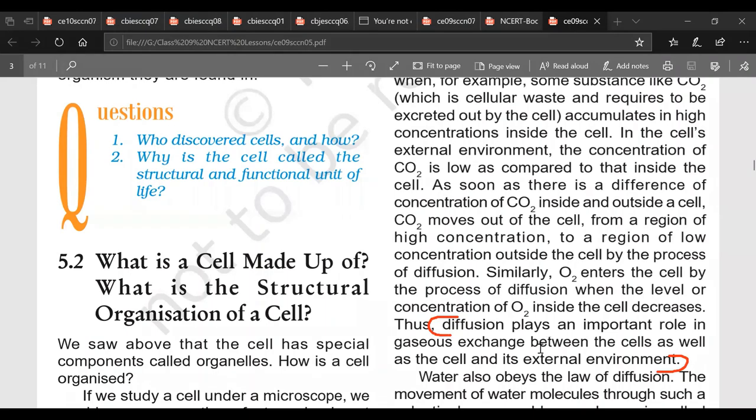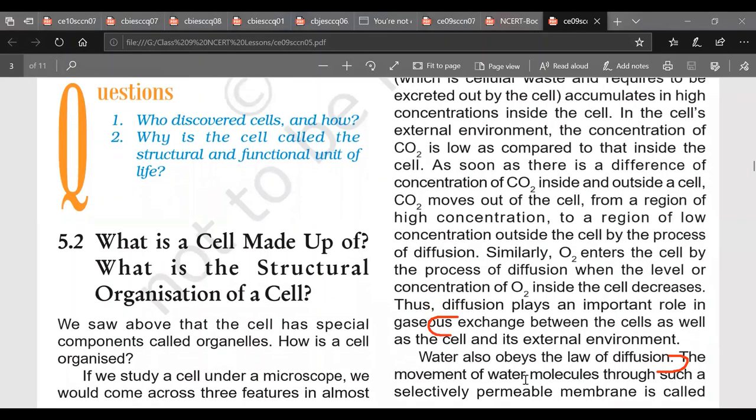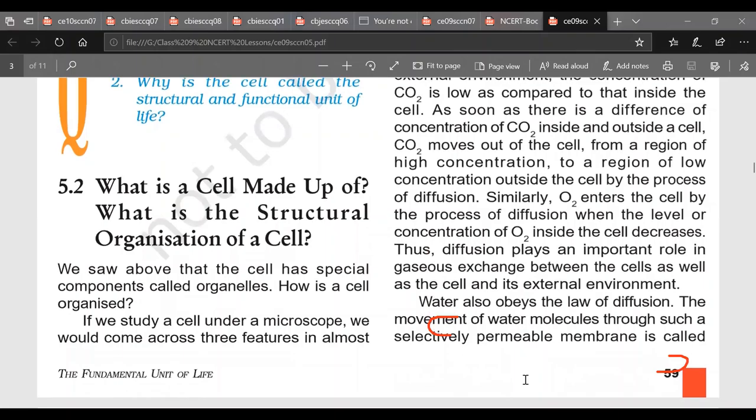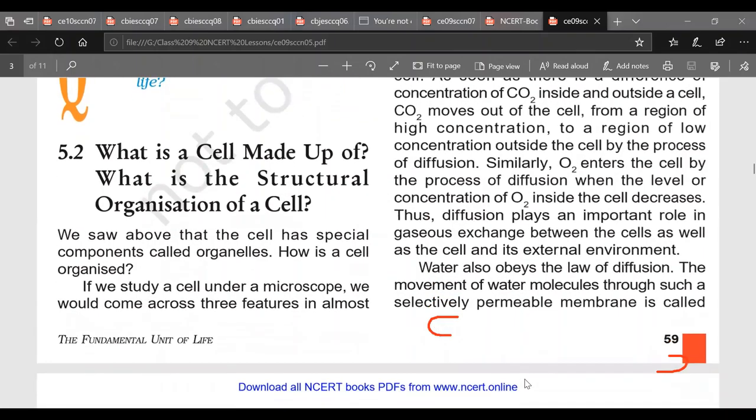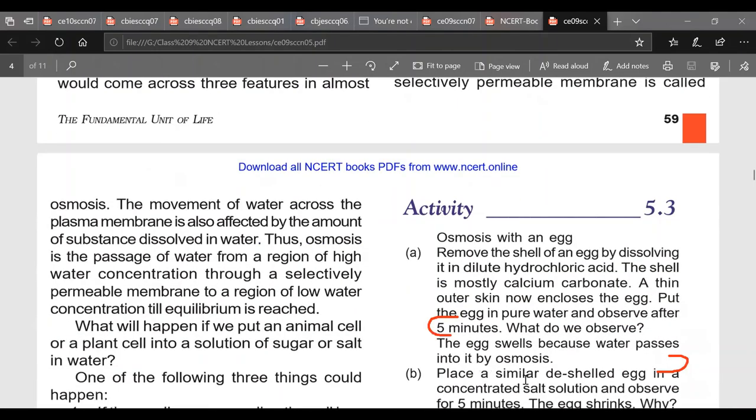Now we come to next part, a special form of diffusion, that is, in which only the solvent molecules move. This is now termed as osmosis. In osmosis, movement of water across plasma membrane is affected by amount of substances dissolved in water.